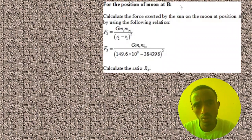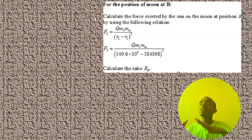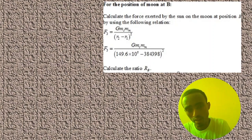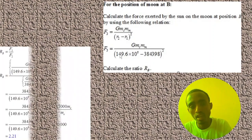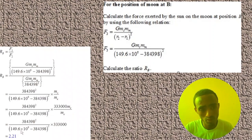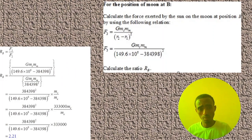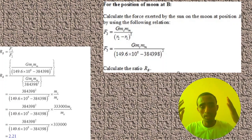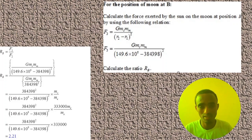At position B also, the force exerted by the earth on the moon is the same, but the force exerted by the sun on the moon varies because the distance also varies. We can calculate this force 3, and simply divide force 3 by force 2, and we will get the final answer. As you can see, this problem is very easy. First, determine the force between the sun and the moon, and we can simply calculate that force, and the final answer is the same as question number 13.